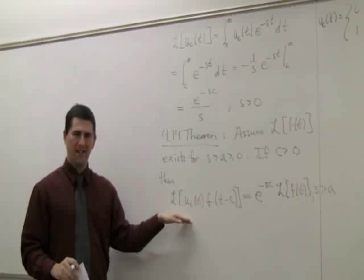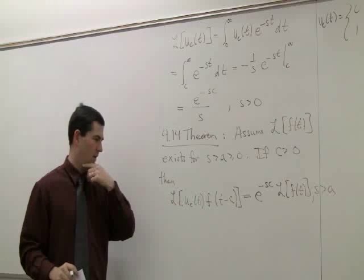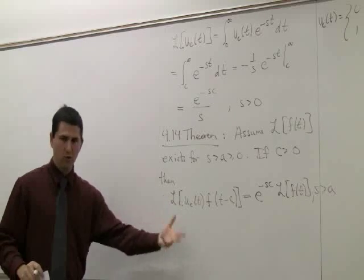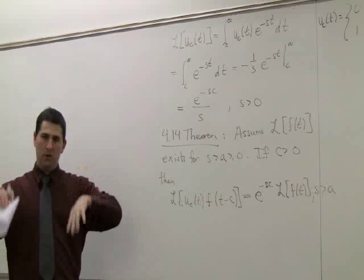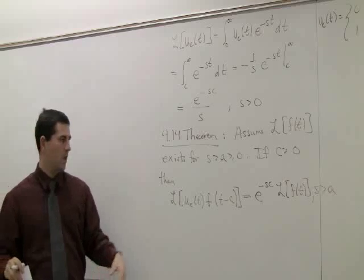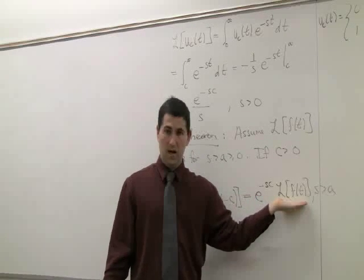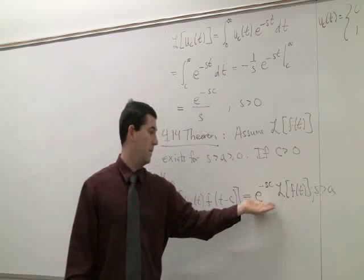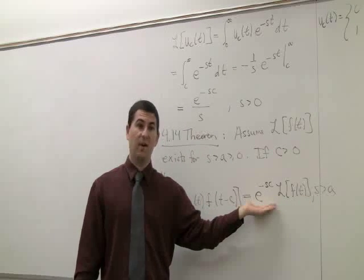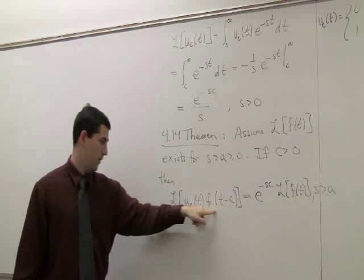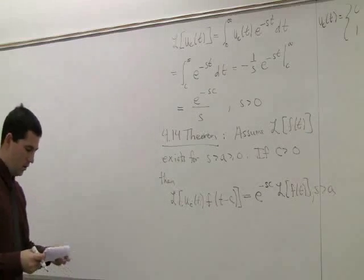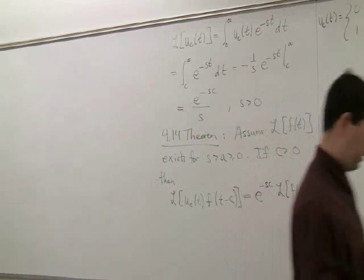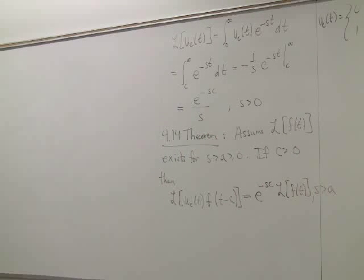The Laplace transform of U_C(T) times F(T minus C) equals e to the minus SC times the Laplace transform of F, for S greater than A. The most useful way to use this formula is right to left: you've computed the Laplace transform, you end up with some function you know how to invert, but then you notice it's multiplied by an exponential, and you recognize it must have come from this shifted function.